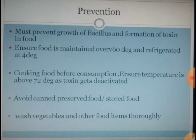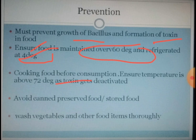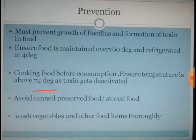To prevent it, you should prevent the growth and presence of the organism in your food and also prevent the formation of toxin. Food should be kept over 60°C, or if refrigerated, at 4°C or below. Cook food before consumption and avoid eating raw foods like salads and green leafy vegetables, as the organism from the soil can easily get onto the food surface. Ensure cooking temperature reaches around 72°C or more, because the toxin is a protein and will be deactivated at this temperature.